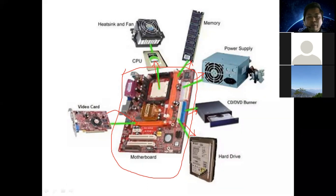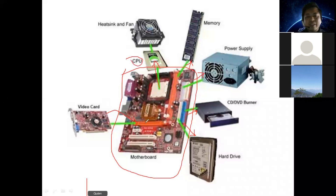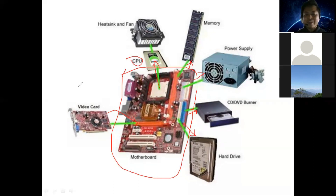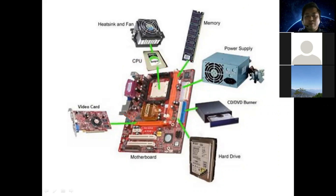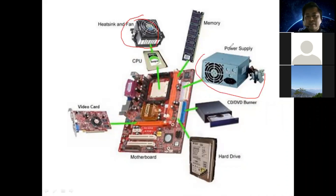There is a fan inside the CPU — the central processing unit — to keep it cool. When using a laptop or computer, it is full of data and generates heat. The fan is used to cool down the system and keep the computer functioning properly.